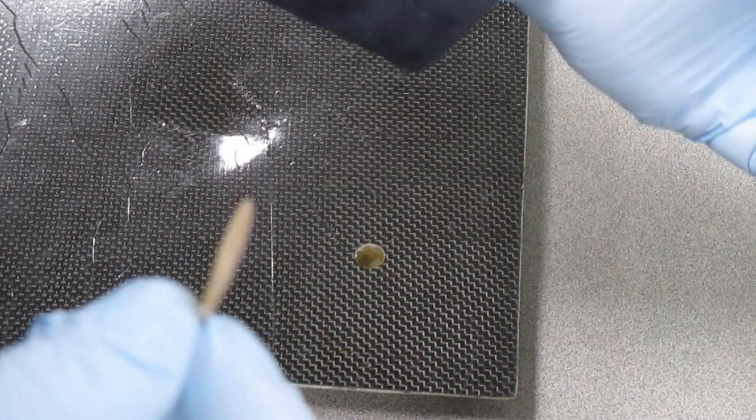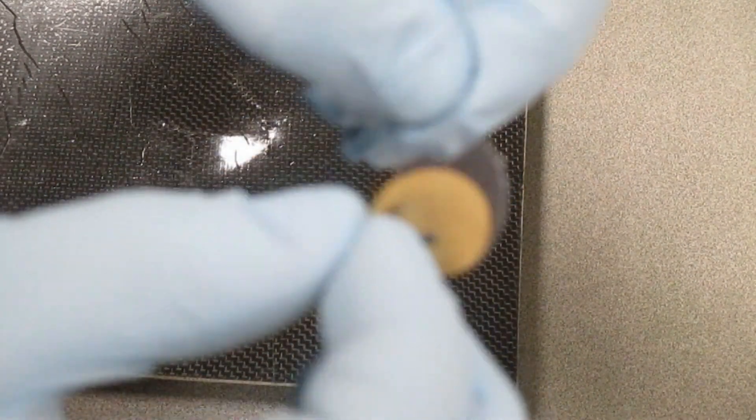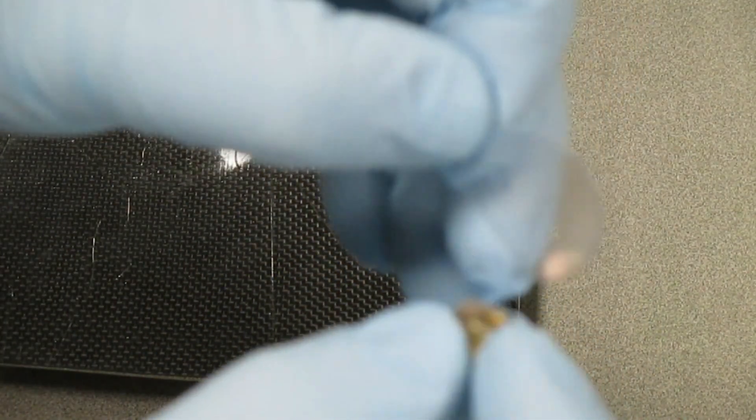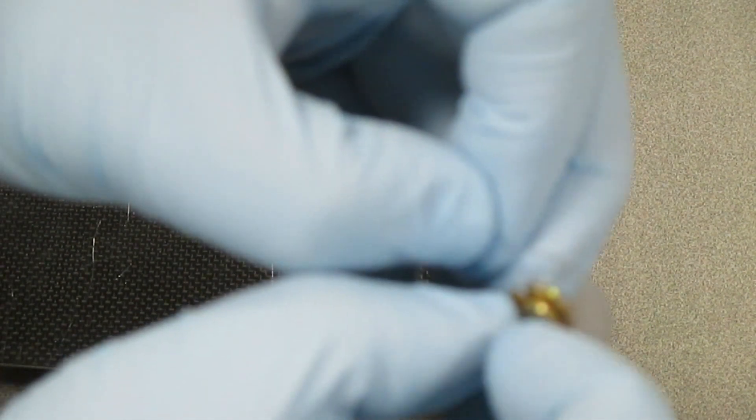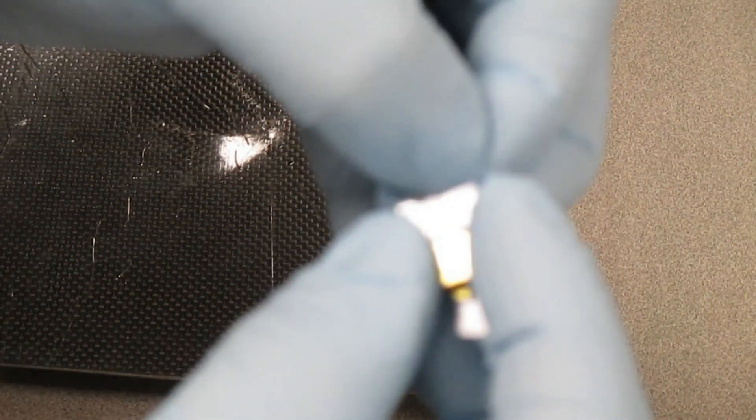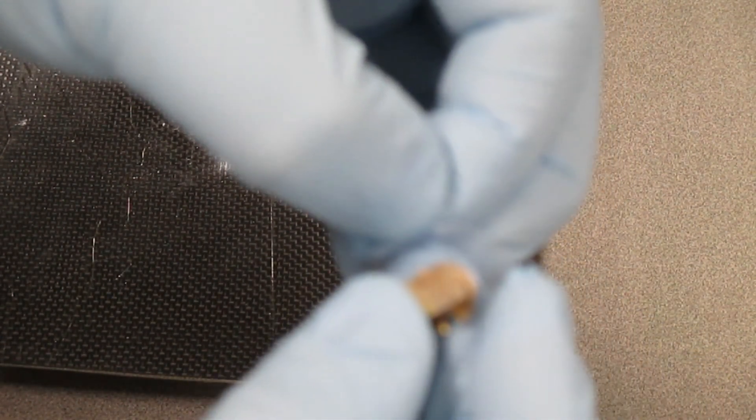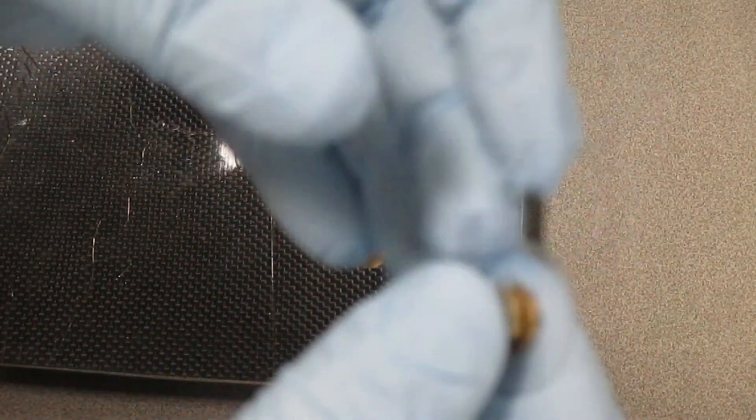Next thing we want to do is line up the holes in the attachment sticker with the holes on the insert itself. One side of the sticker will just be plastic, the other side will have the paper and the adhesive. Try not to touch that adhesive, we want to keep it as clean as possible. We're going to take our insert and line up the two holes in the insert with the two holes on our plastic sticker. Be super picky, we want those to fit just absolutely perfect.